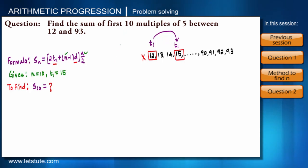And what is the common difference? Common difference will be of 5, because the multiples of 5 between 12 and 93 will be something like 15, 20, 25... to 85 and 90, right? So the difference will be of 5 only. So we got d equals 5.